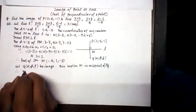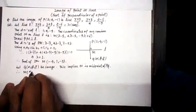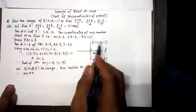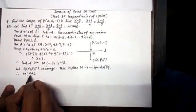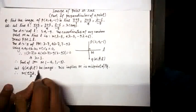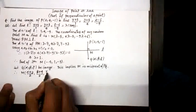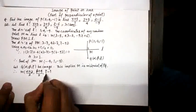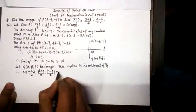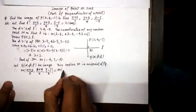So M will be obtained by using midpoint form, that is (x₁+x₂)/2, that is (α+2)/2, (β+4)/2, (γ-1)/2.